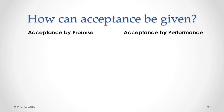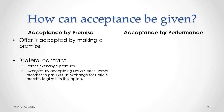How can acceptance be given? It can be given by either the making of a promise or by performing what is required by the terms of an offer. For acceptance by promise, an offer is accepted by a bilateral contract where the parties are exchanging promises — each party is making a promise to the other. For example, by accepting Daria's offer, Jamal promises to pay $500 in exchange for Daria's promise to give him the laptop.